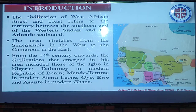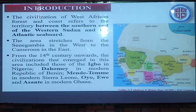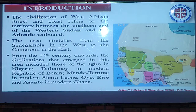Let us introduce ourselves to these West African states. The civilization of West African forests and coasts refers to the territory between the southern end of the Western Sudan and the Atlantic seaboard — that is the coastal area. So the territory we are looking at is the southern end, just after the Western Sudan. The area stretches from Senegambia in the west to Cameroon in the east.